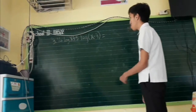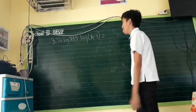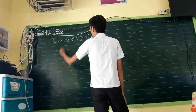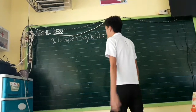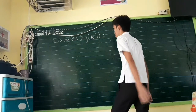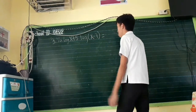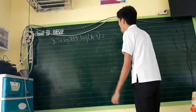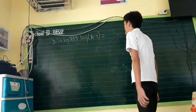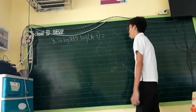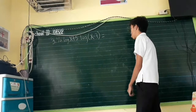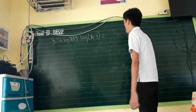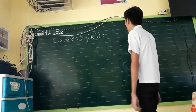For example number 3, we have logarithm of (X plus 5) to the power of (X minus 3). We are going to use the law of logarithm of power and bring the exponent down in front of the logarithm.